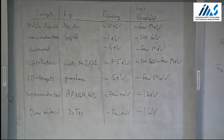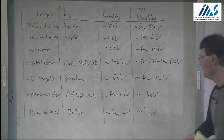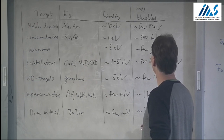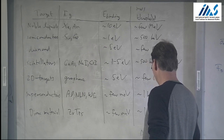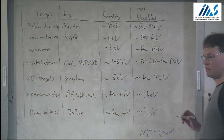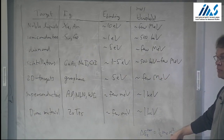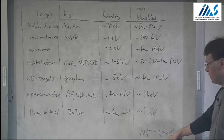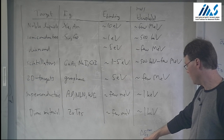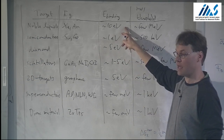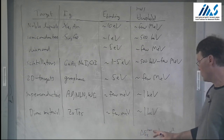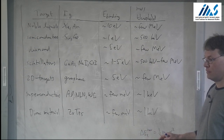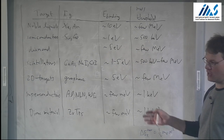I'm going to go through each of these, give the experimental status, discuss what kind of detectors people use to look for these signals — electron recoils. Depending on the material, you get different signals. Then we'll turn to dark matter nuclear interactions. Some materials will be covered quickly, some in more detail.